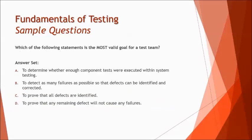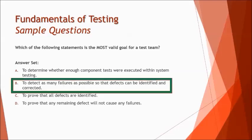The second question: which of the following statements is the most valid goal for a test team? Option A says to determine whether enough component tests were executed within system testing. Option B says to detect as many failures as possible so that defects can be identified and corrected. Option C says to prove that all defects are identified. Option D says to prove that any remaining defect will not cause any failures. The right answer is B. Option A is problematic because component testing and system testing are different levels — you cannot execute a component test at system level.